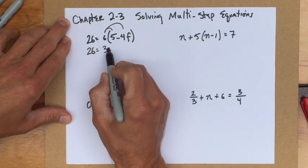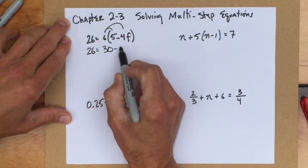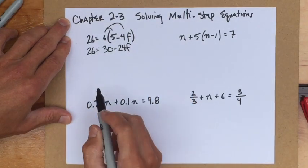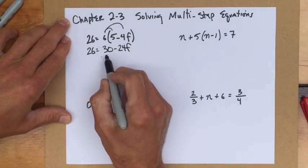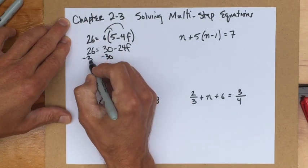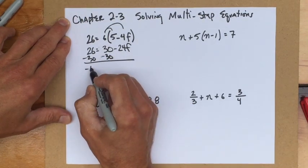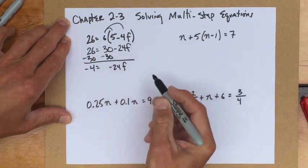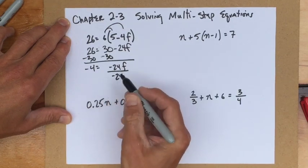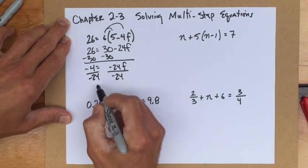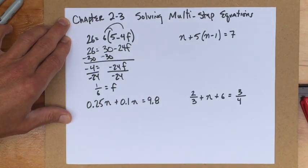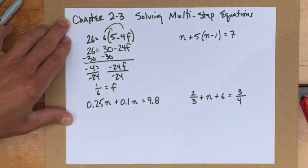I know that distributing is going to simplify the right-hand side. So I'm going to distribute the 6 to the 5 and get 30. The 6 to the negative 4 and get negative 24f. I know I'm saying negative instead of minus. It works the same way. And now I'm going to solve this just like I did in the previous video. I'm going to do minus 30 to both sides. I'm going to have negative 4 is negative 24f. And I'm going to divide both sides by negative 24. And I'm going to get a fraction on this one. Don't be scared. It's positive 1 sixth is the letter f. And once again, if we needed to check that, we could surely do so. For the sake of time here, I'm going to run the risk that I haven't made any mistakes.